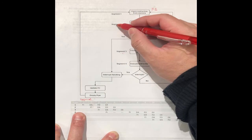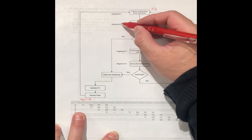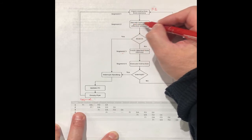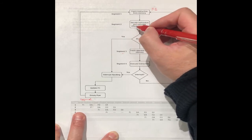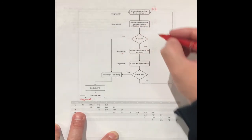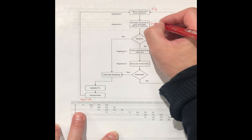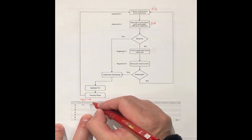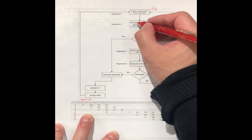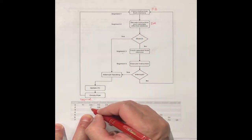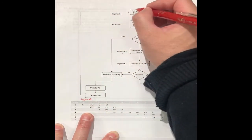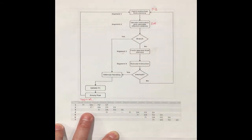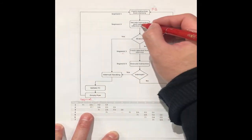In segment two, the computer decodes the instruction and calculates the effective address. We call it DA. In segment two, they do the DA decode. And at the same time, you can still do the FI fetch instruction from memory. So we can do both — segment one and segment two — simultaneously.